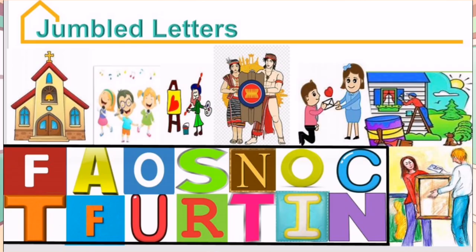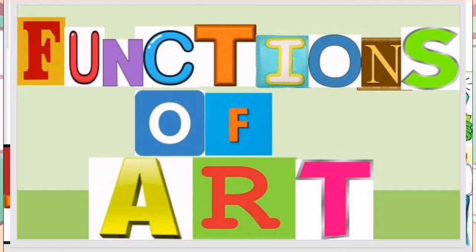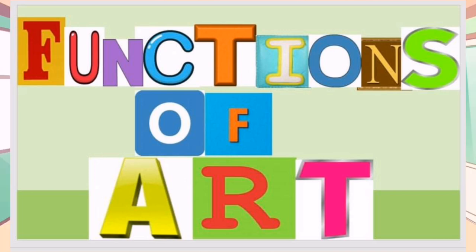To start our lesson, I have an activity for you. You are going to rearrange the jumbled letters using the pictures given. You can create 3 words out of it. If your answer is 'functions of art,' you are correct!